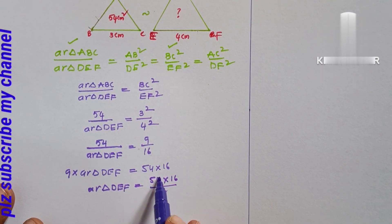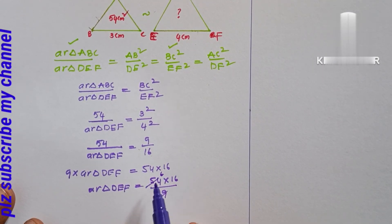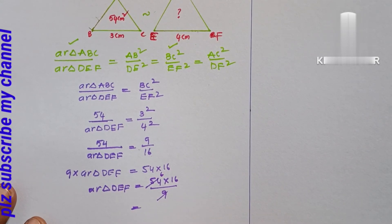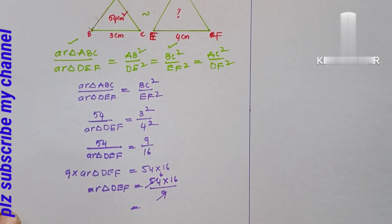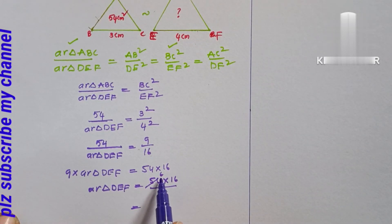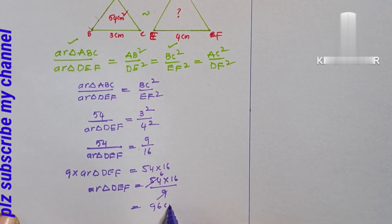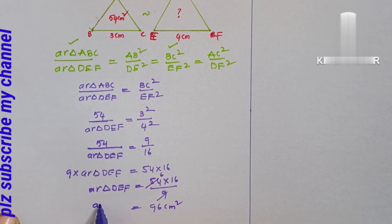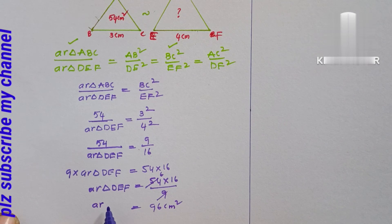Area of triangle DEF equals 54 multiplied by 16, divided by 9, which gives 96 centimeter square. So the area of triangle DEF is 96 cm².